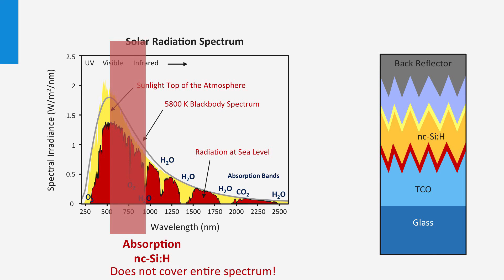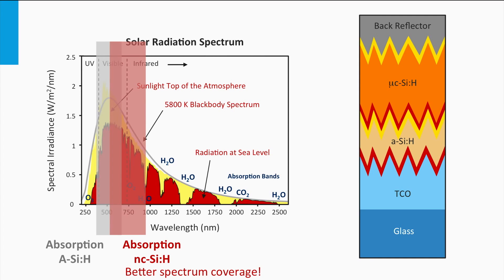Both single junction amorphous and nanocrystalline silicon solar cells do not have optimum spectral utilization. For that reason, multi-junction concepts are used in the thin film silicon field. One of the most studied concepts is the micromorph concept: a double junction consisting of one amorphous silicon PIN junction and one nanocrystalline silicon PIN junction. The amorphous junction has the highest bandgap and acts as the top cell, facing the incident light first. The cell with the lowest bandgap — the nanocrystalline silicon — acts as the bottom cell, harvesting the lower-energy photons.